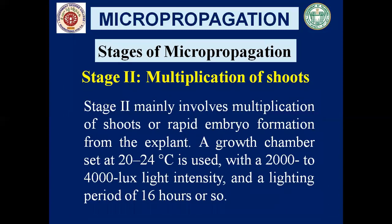Stage 2 is multiplication of shoots. We have selected a plant, taken an explant, surface sterilized it, placed it on an appropriate nutrient medium, and allowed it to grow. The explant undergoes totipotency, giving rise to callus. Callus is an unorganized mass of proliferating cells. If you subculture callus onto appropriate nutrient medium, you will get a number of plants.